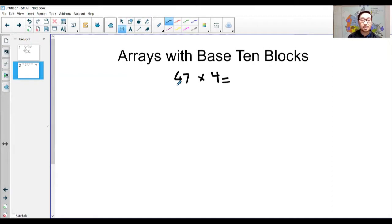47 times 4 means that I'm showing 47 four times. Instead of drawing 47 dots 4 times, I'm going to use base 10 blocks and arrange them in arrays.